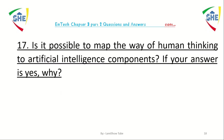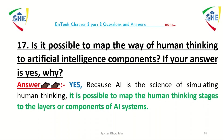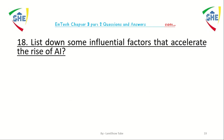Question number 17: is it possible to map the way of human thinking to artificial intelligence components? The answer is yes — it is possible to map human thinking stages to the layers and components of an artificial intelligence system.